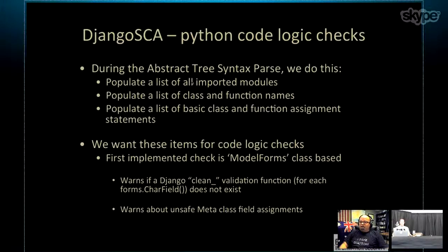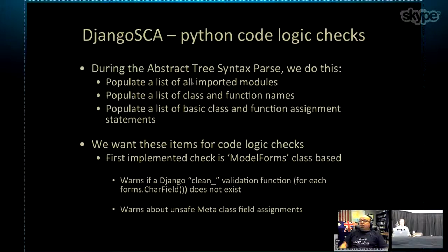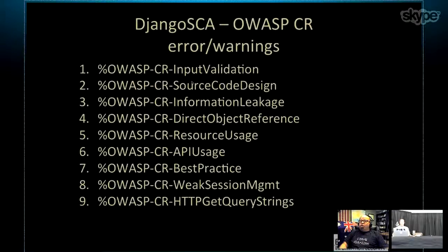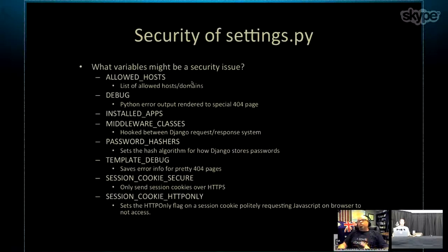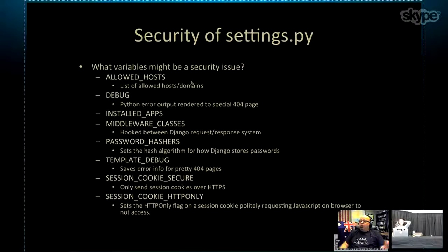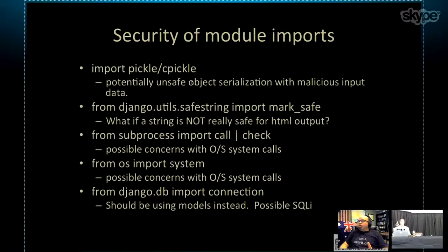The Python logic checks involve populating a list of imported modules, classes, and function names, then performing logic checks based on that information. ModelForms class is the first implemented, and we warn about unsafe meta class field assignments and other form character fields. In terms of security variables to look for: ALLOWED_HOSTS, DEBUG, INSTALLED_APPS, MIDDLEWARE_CLASSES, PASSWORD_HASHERS, TEMPLATE_DEBUG, SESSION_COOKIE_SECURE, and SESSION_COOKIE_HTTPONLY are examples of what might be useful from a security perspective.